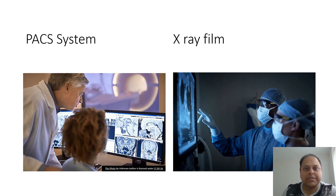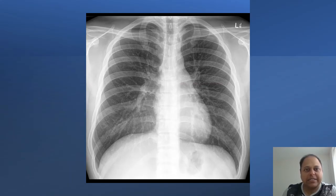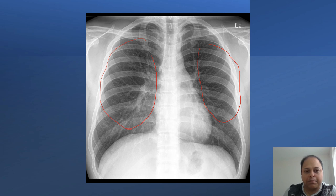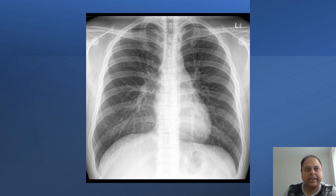Let's start with the basics of chest X-ray interpretation. In the UK, all hospitals have a PAX system so you interpret radiology images on a computer screen rather than on X-ray film as is common in many government hospitals in India. In an X-ray, black means air and white means soft tissue, bones, or blood vessels. So in a chest X-ray, the black areas are the air-filled lungs. Don't be surprised by the big white blob in the middle — that is the heart, and it is normal.